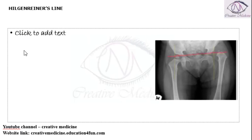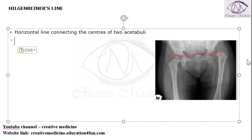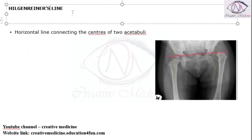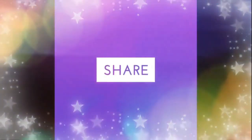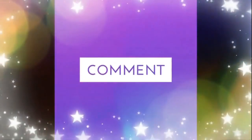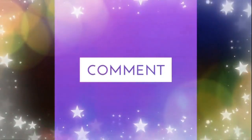So the Hilgen-Reiner line is a horizontal line connecting the two centers of the acetabuli, which is called the Hilgen-Reiner line. Thank you for watching.